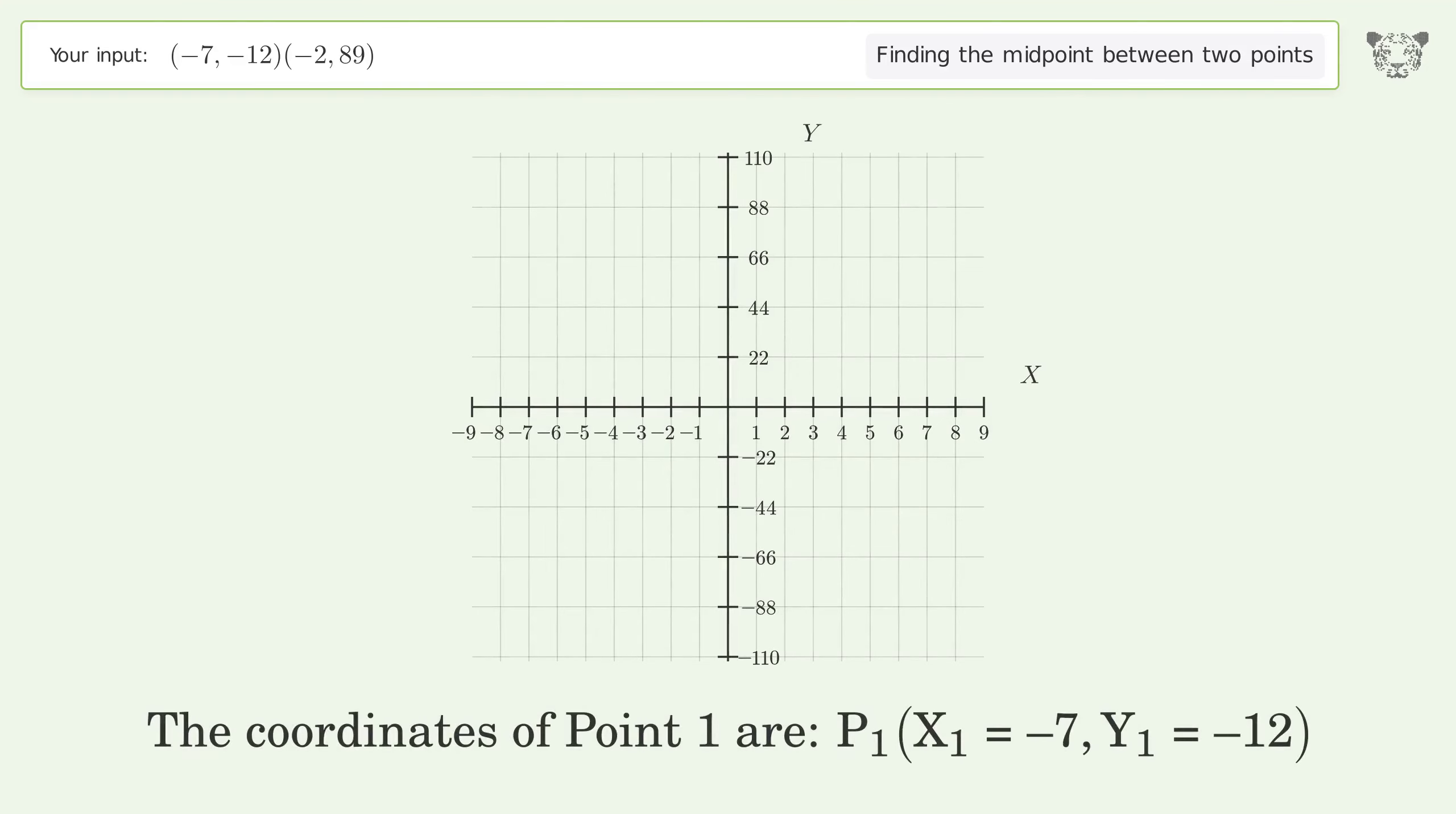The coordinates of Point 1 are x1 equals -7, y1 equals -12. The coordinates of Point 2 are x2 equals -2, y2 equals 89.